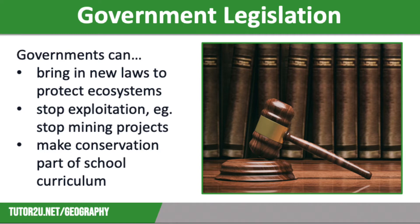One of the things that governments can do is bring in legislation — new environmental laws to protect ecosystems. They can stop the exploitation of the rainforest by developers, perhaps by stopping a mining project or a new dam that's part of a big hydroelectric power scheme. They can also make subjects such as ecology or environmental studies a compulsory part of the school curriculum, meaning that people are educated from an early age about the importance of conservation and the consequences of exploitation.